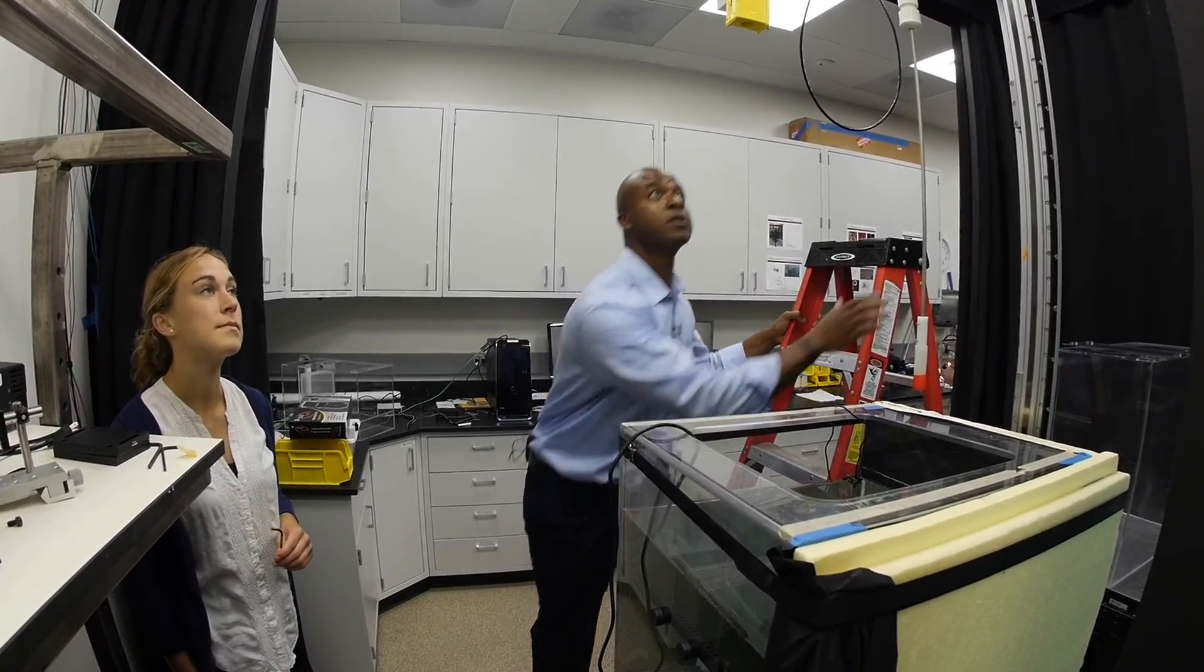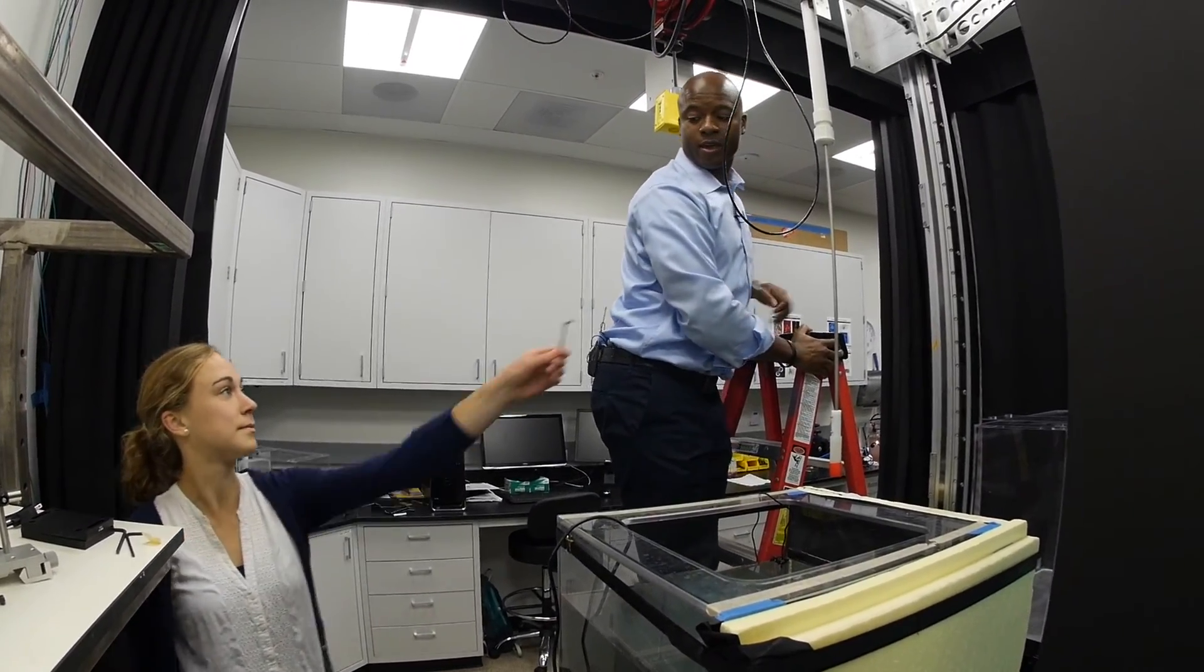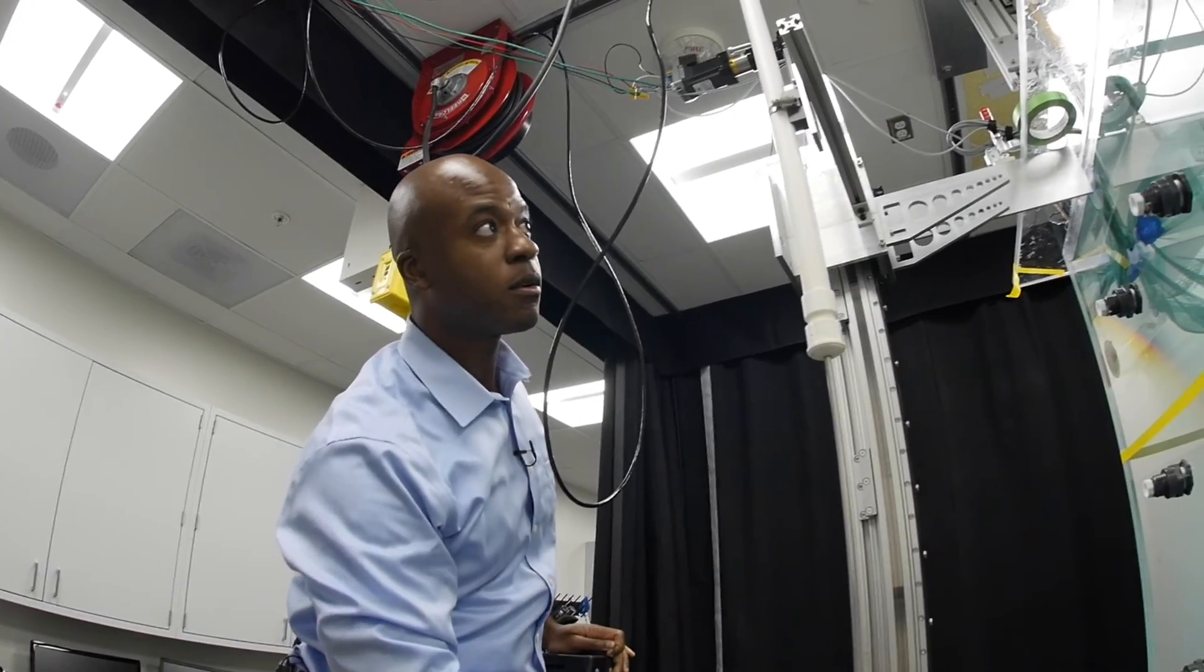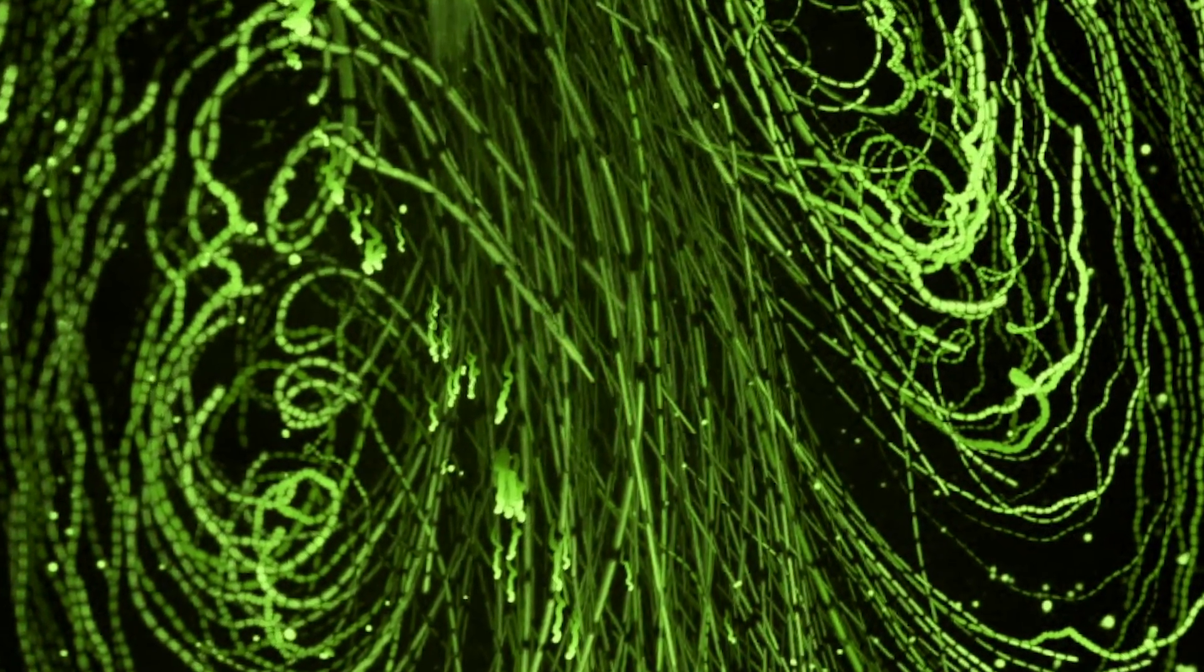Their experiments show that all that kicking really does contribute to some serious churn in the water. So we found, surprisingly, that these small animals can have an enormous impact on the mixing of the water column, and that they can also create eddies in the water column that are much larger than their individual body sizes.